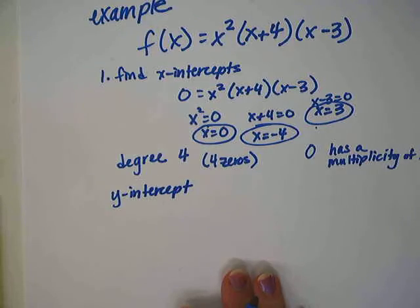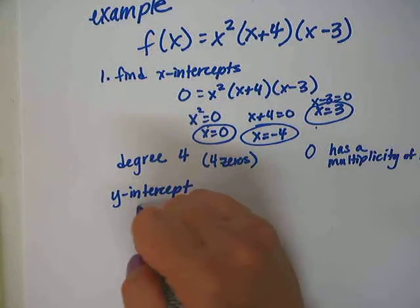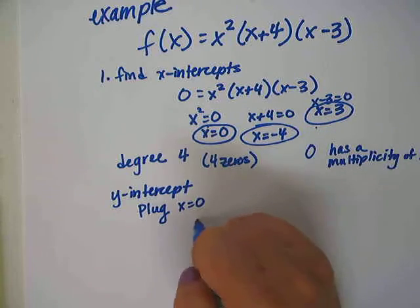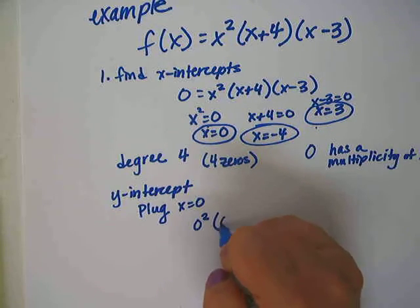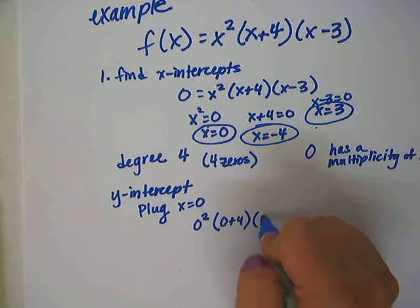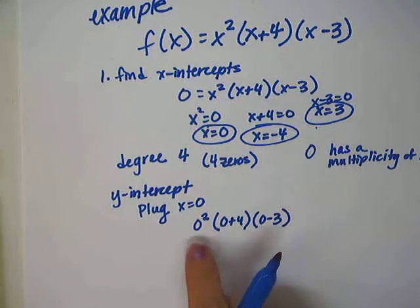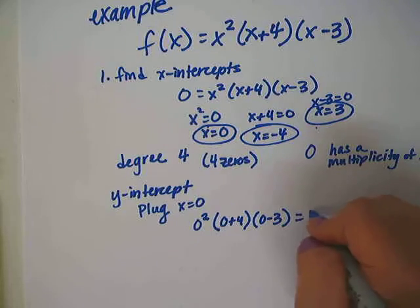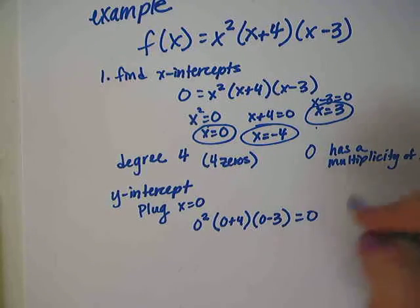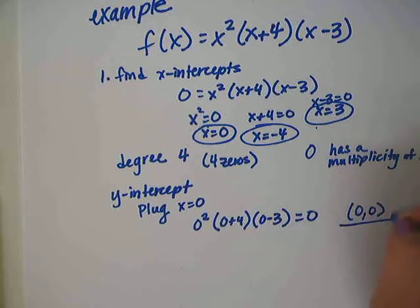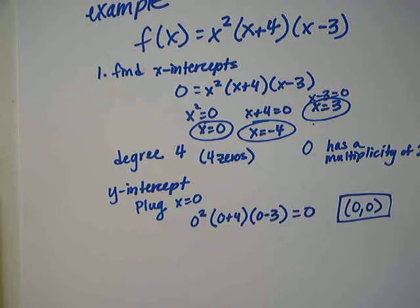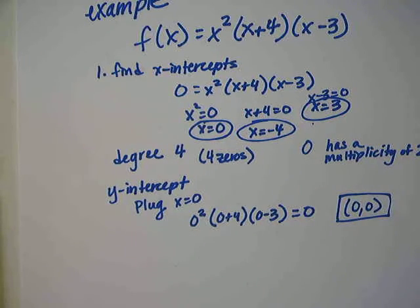Next, we're going to find the y-intercept. Since this is a function, there will only be one y-intercept. To find it, plug 0 in for x: 0 squared times (0 plus 4) times (0 minus 3). The 0 out front multiplies the entire thing to 0, so the only y-intercept is at (0, 0).